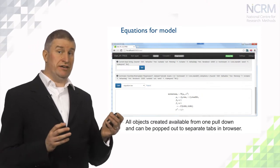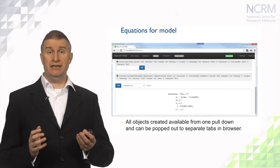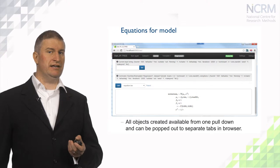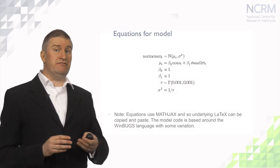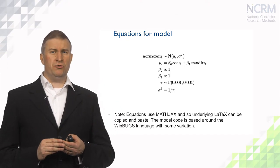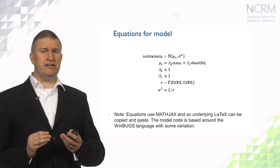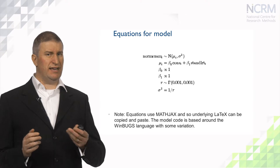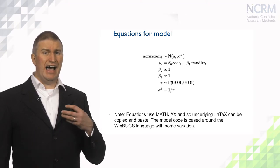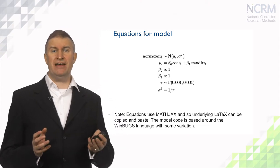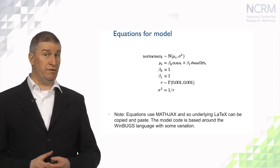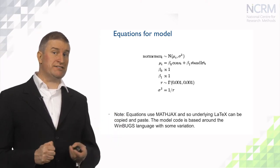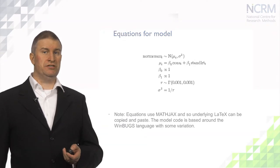The objects are accessed via the pull-down list to the left, and here we see the regression equation created in LaTeX format. Here we see a regression based on the user inputs. Note that we use the term 'cons' to represent a column of ones that represents an intercept parameter, and the first two lines represent a standard linear regression. As we are using MCMC estimation, the remaining lines specify prior distributions for the model parameters. We use a piece of software called MathJax which allows the underlying LaTeX code to be copied.